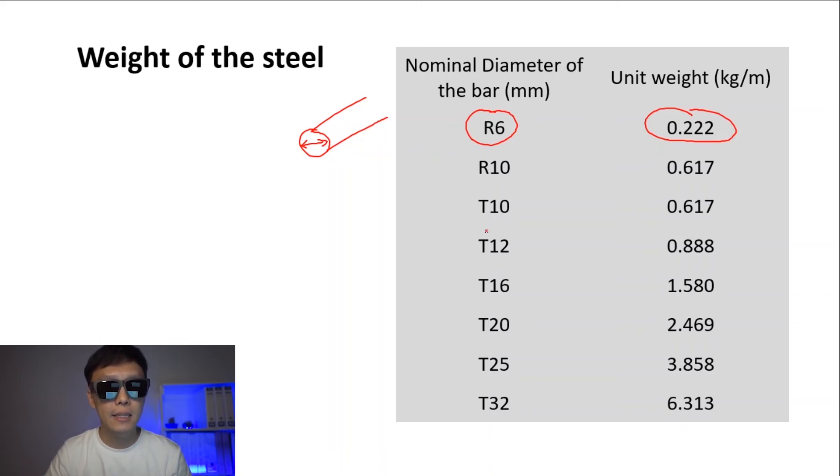We take another example. Let's say T16. This is high tensile steel bar of 16mm diameter. The weight of every meter of it is 1.58 kg. So this is how we look at the nominal diameter of the bar and the reading of the unit weight.